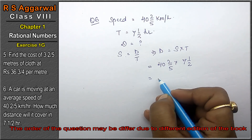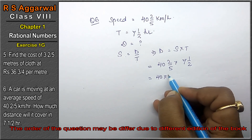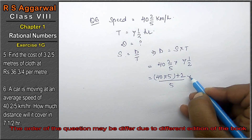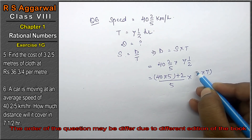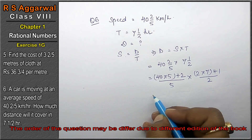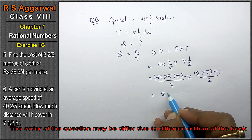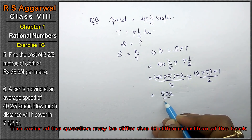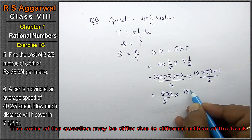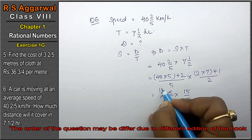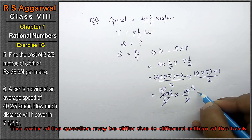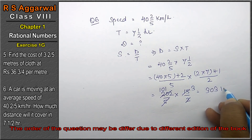Speed is 40 and 2/5, time is 7 and 1/2. Converting: (40×5+2)/5 × (7×2+1)/2 = 202/5 × 15/2. Multiplying: 202×15=3030, divided by 10 = 303. The distance covered is 303 kilometers.